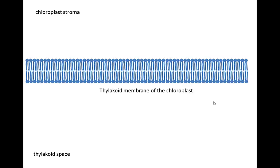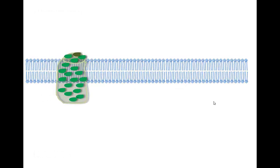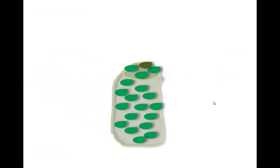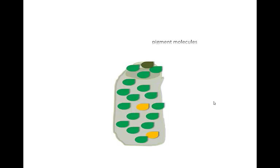Light energy is captured by photosystems inserted into the thylakoid membrane. Let's take a closer look at a photosystem. Photosystems are clusters of two to three hundred pigment molecules held together by a protein matrix and sitting in the thylakoid membrane.